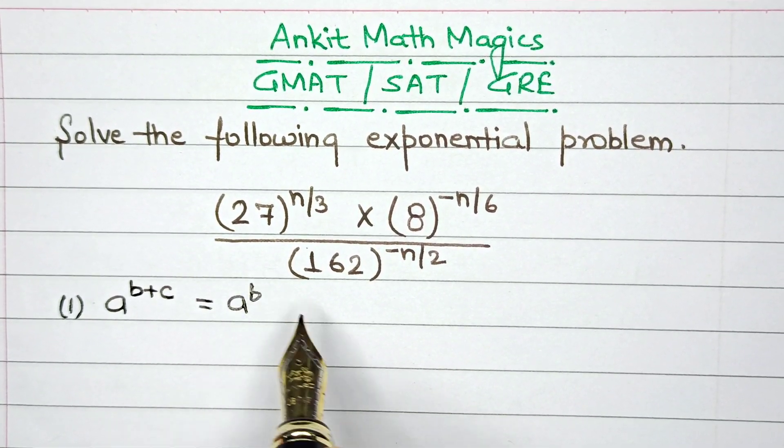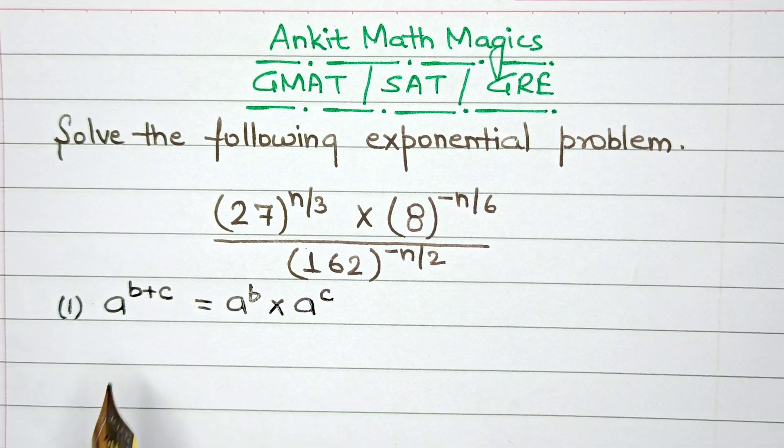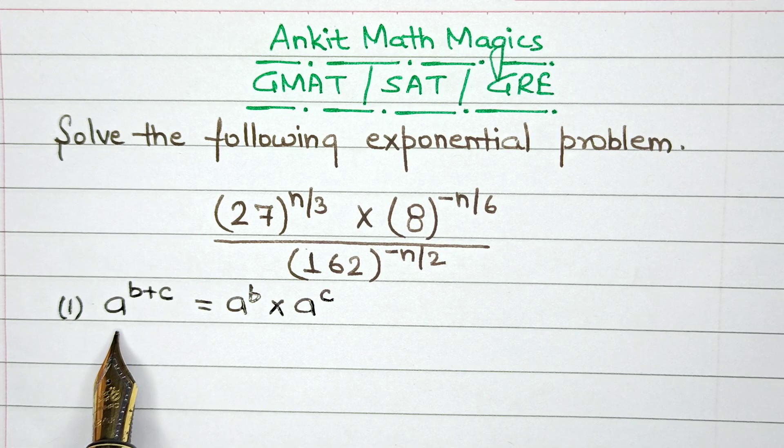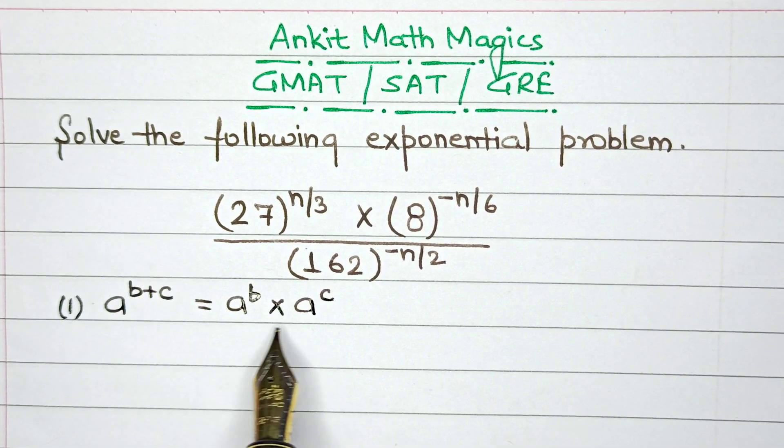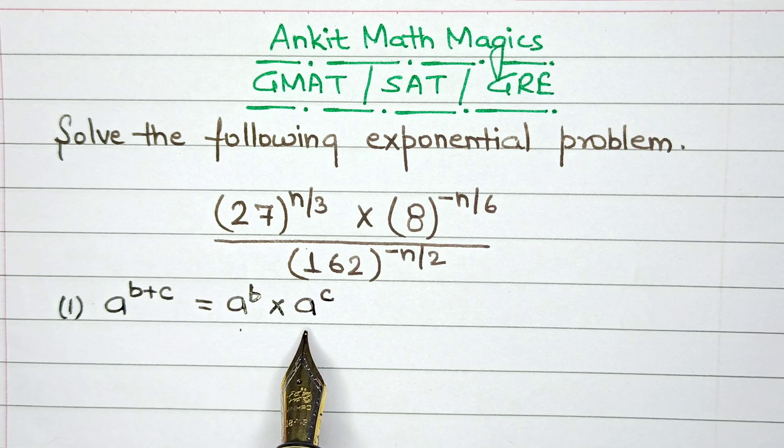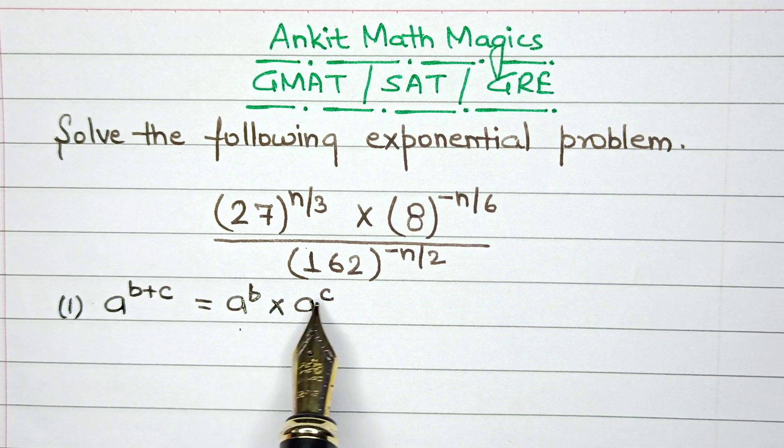...then this can be written as a raised to the power b multiplied by a raised to the power of c. So that means if we have a base number and in power we have an addition of two numbers, then these two numbers can be separated in this format where we keep the base same, keep a multiplication sign, and then raise individual powers onto the same base.